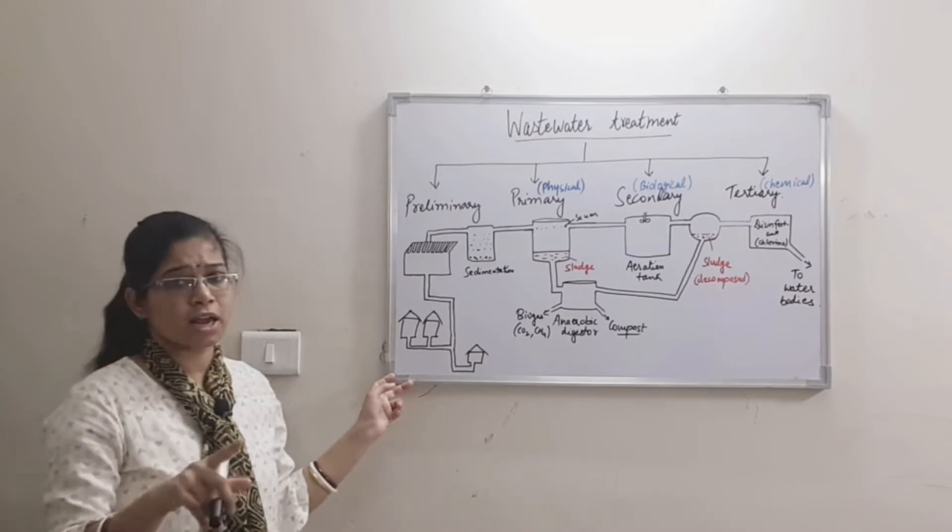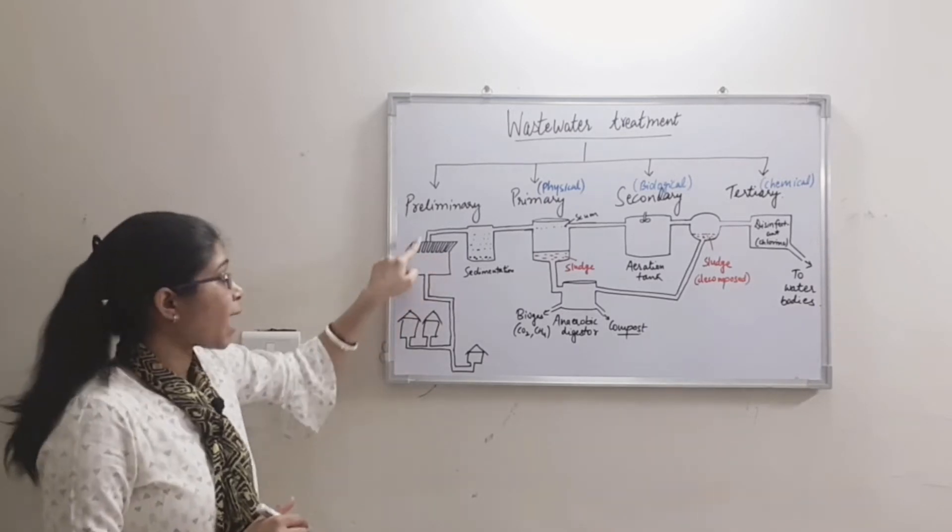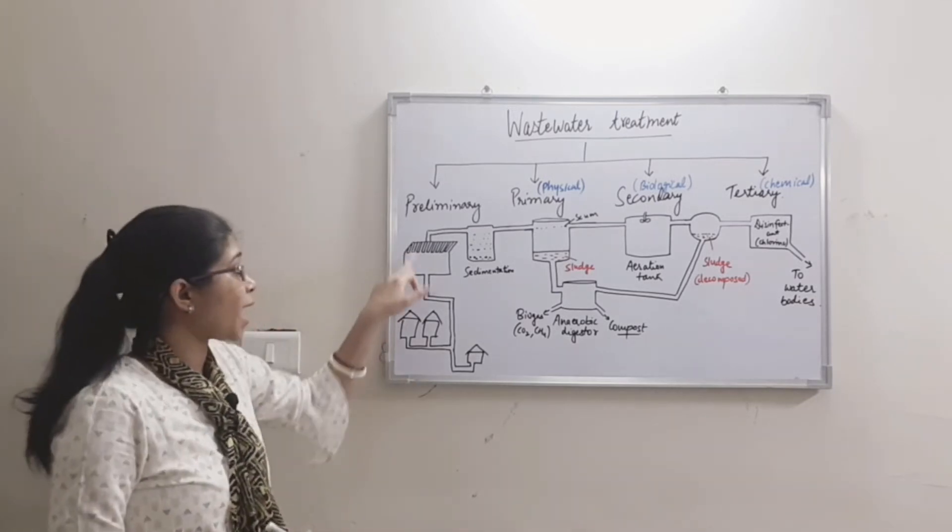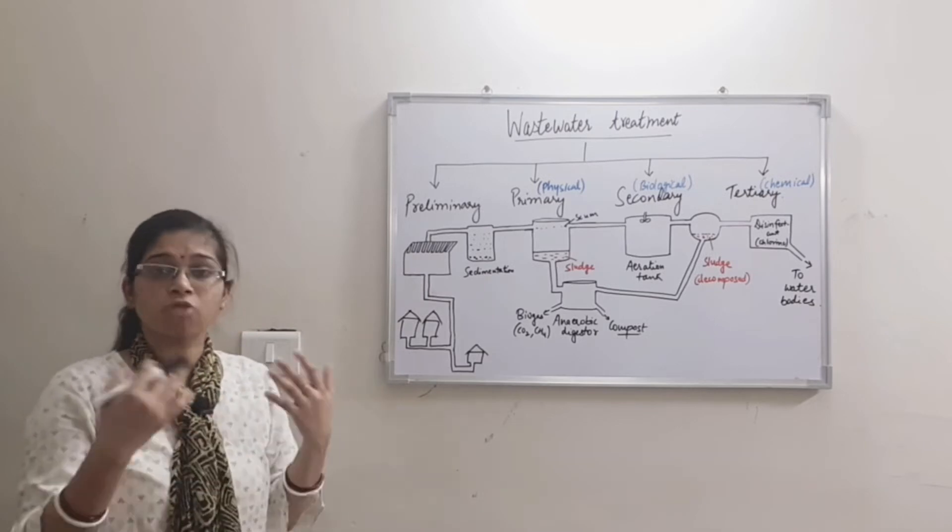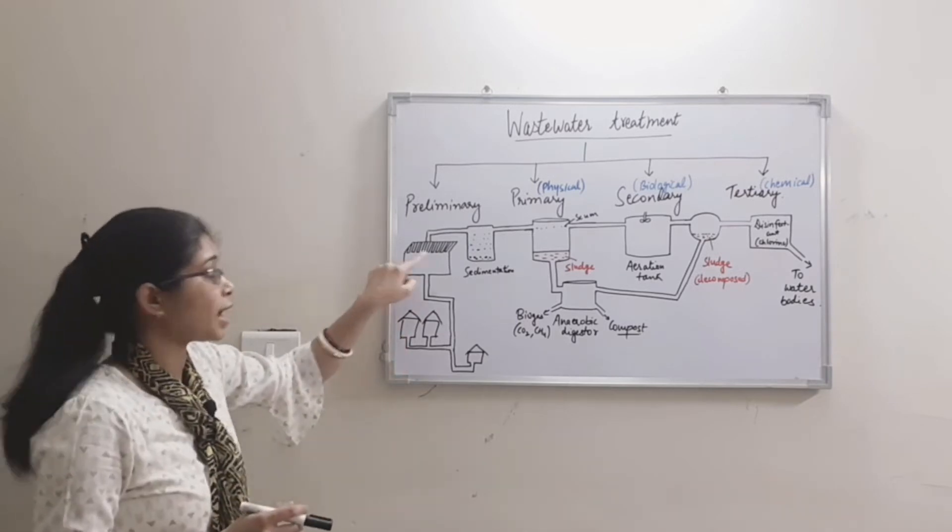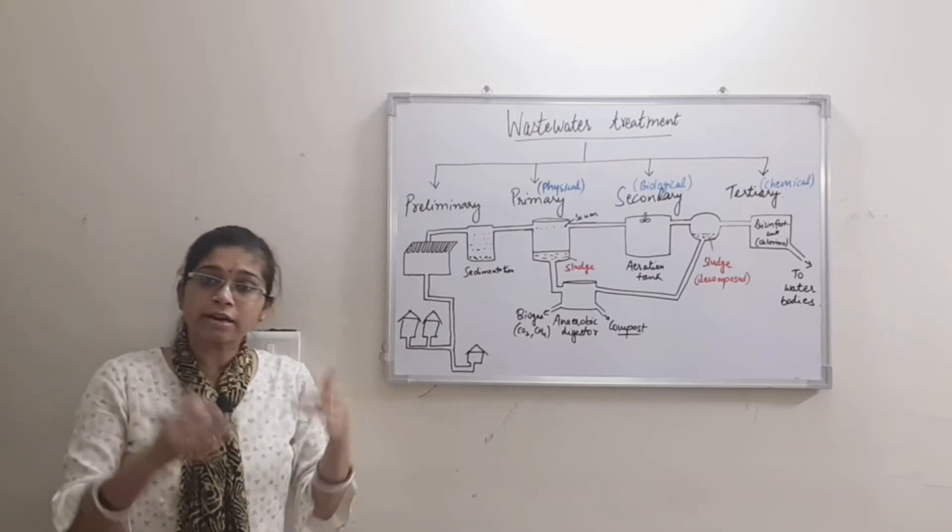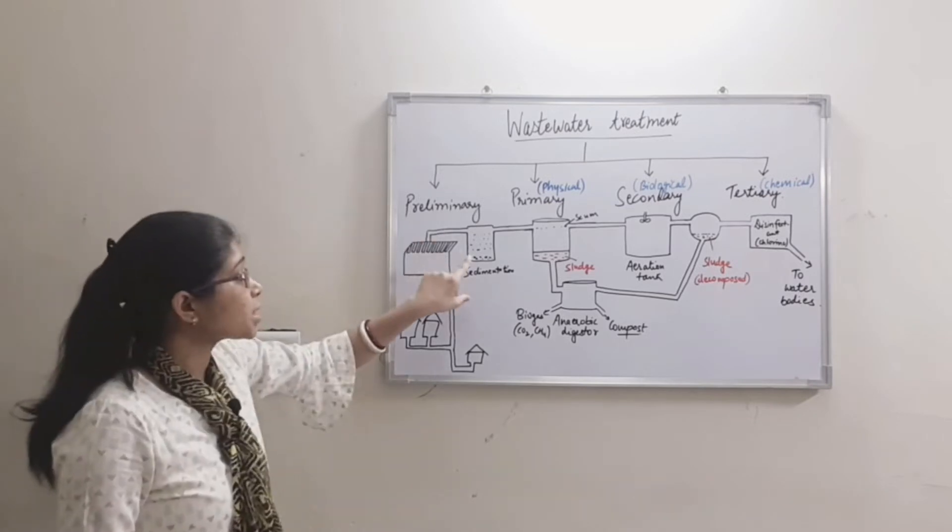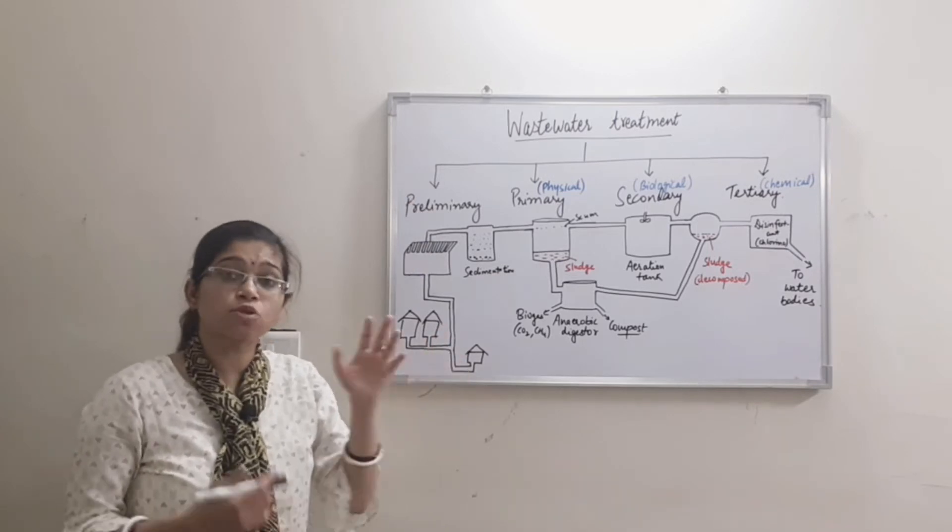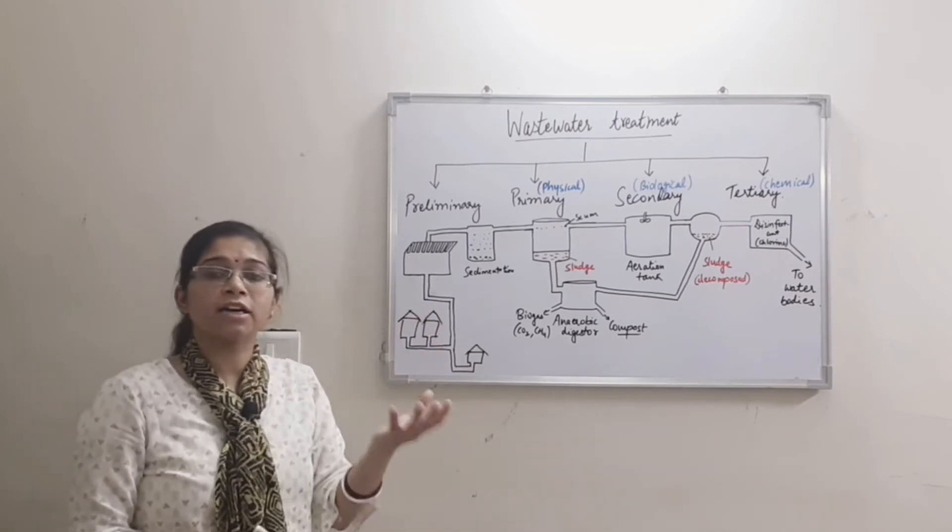First, in preliminary treatment, sewage passes through a bar type structure to remove large objects and dissolved particles. Then through grids to remove small tiny particles called grits. In the sedimentation tank, the sewage speed is very slow so that heavy particles like grits settle down and lighter particles go forward.